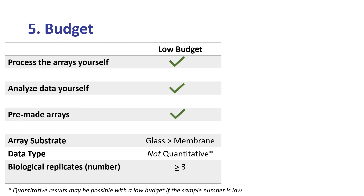Finally, what is your budget? If your budget is limited, then the most affordable option is processing and analyzing pre-made arrays yourself. Glass-based arrays are also a cost-effective option since they require the smallest amount of antibodies. Semi-quantitative array options are less expensive than quantitative arrays. Researchers who need quantitative data but have a limited budget can still use quantitative arrays by minimizing the number of samples and choosing an in-stock array with a small number of protein targets.